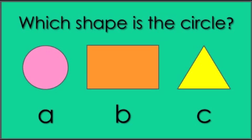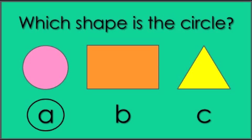Which shape is the circle? Is it the A shape, the B shape, or the C shape? What do you think? The answer is A. The A shape is a circle.